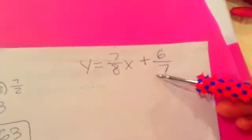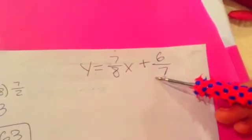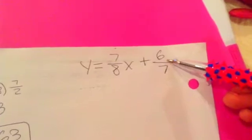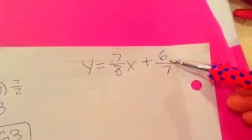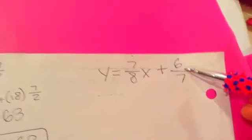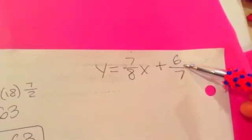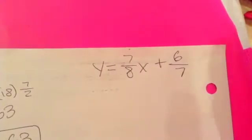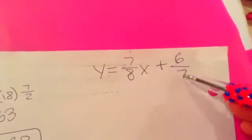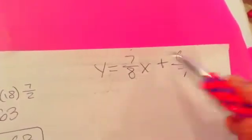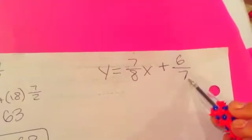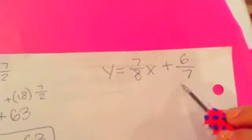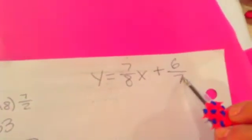So you're probably like, what the heck is this? Well, the first thing you're going to have to do is find the LCM, which is Least Common Multiple. So you want to go to the denominators, 8 and 7. And the smallest number, of course, here is 7.